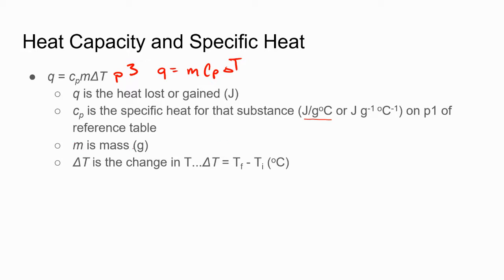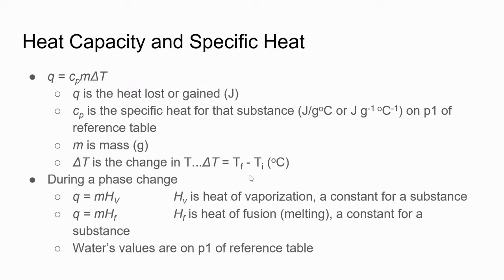M refers to mass and it needs to be in grams. Delta T means change in temperature, so we subtract the final temperature minus the initial temperature. This is where the value could be negative if the final temperature is lower, meaning that energy was being lost.